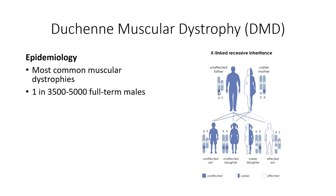A single functional copy of the dystrophin gene is sufficient for normal expression of the protein. But while XX individuals have two copies to inherit a working copy of the gene, XY individuals are dependent on the one inherited copy. This is the reason why the disease is almost exclusively seen in XY individuals.